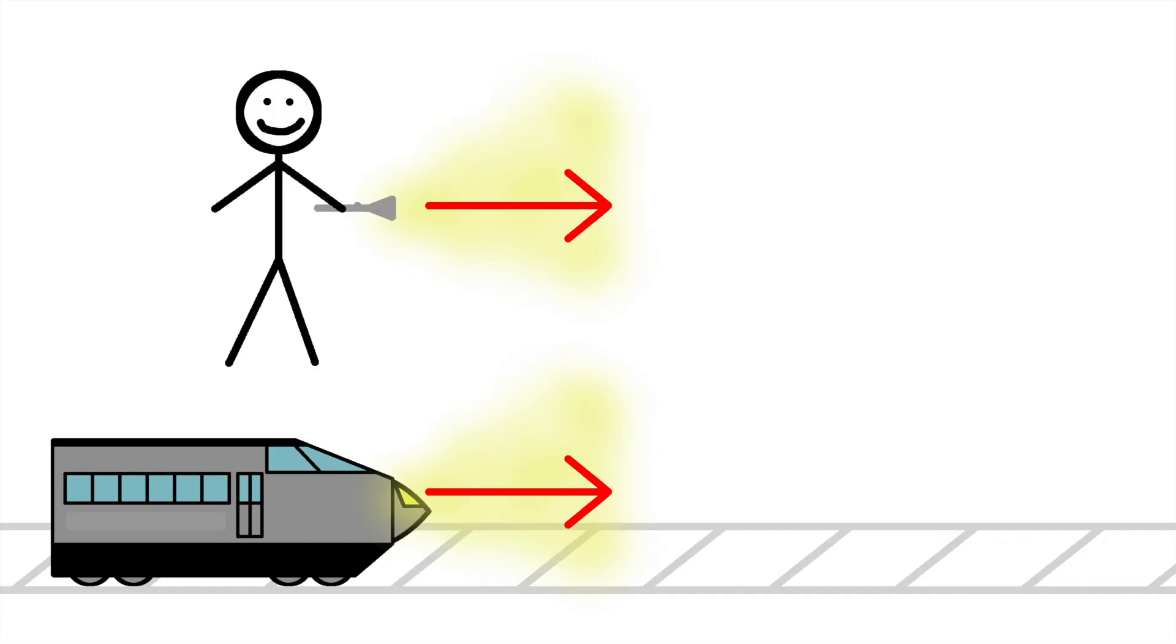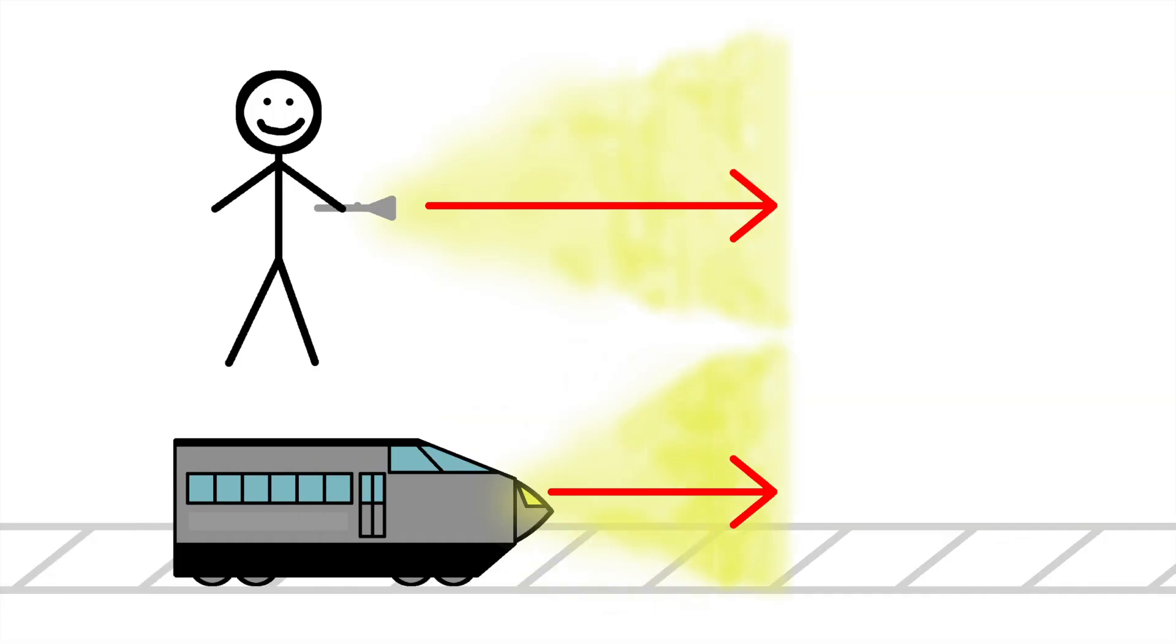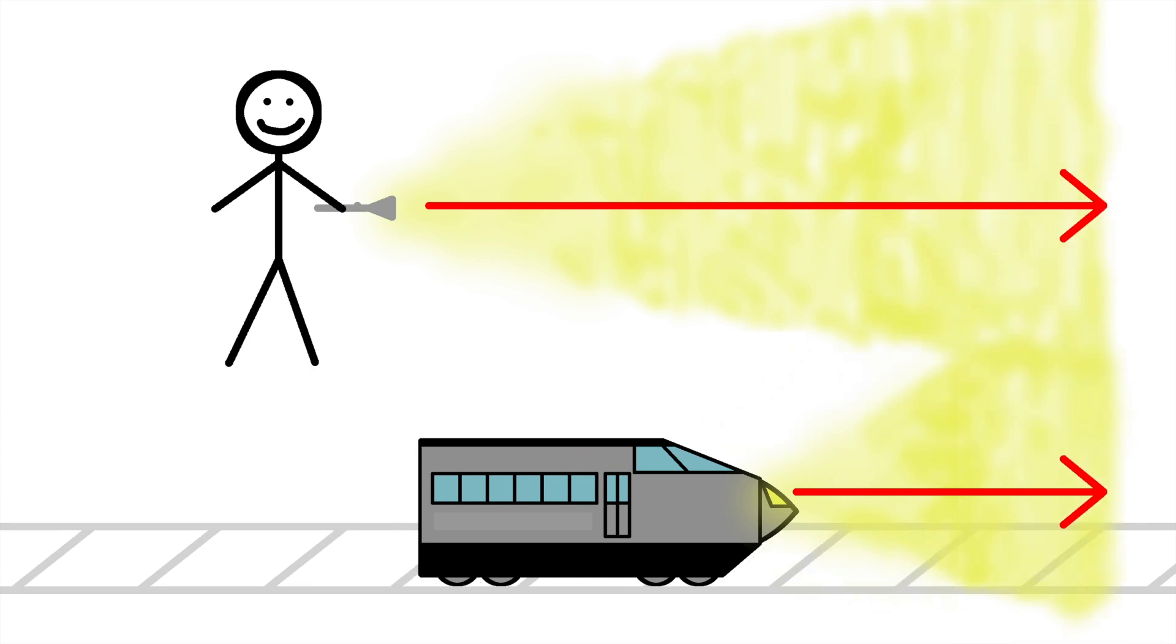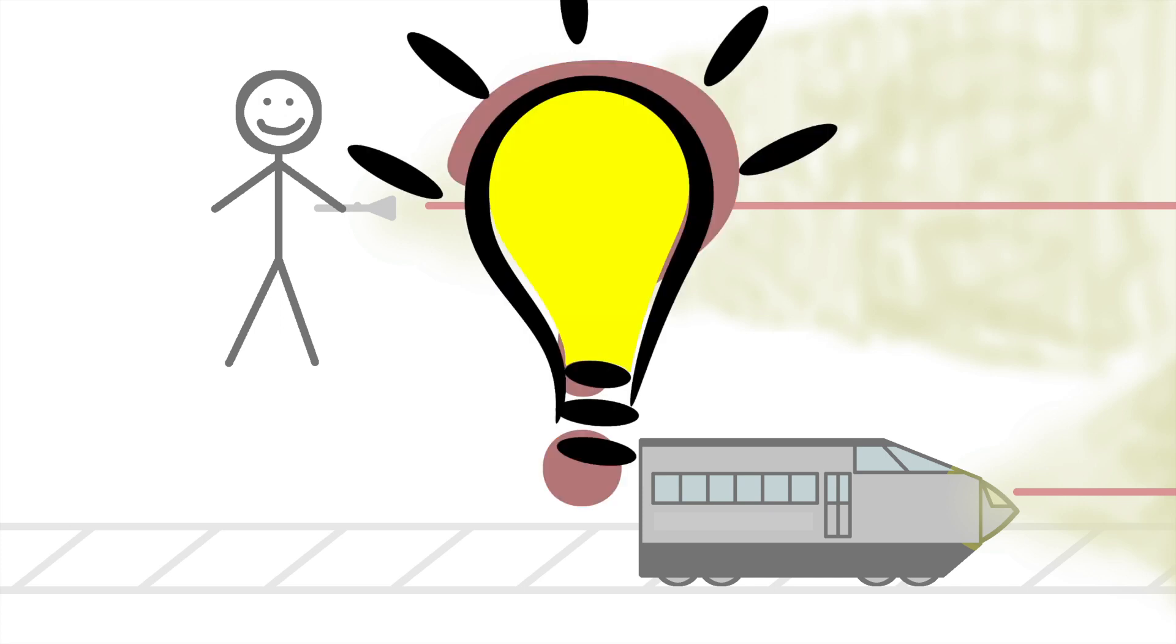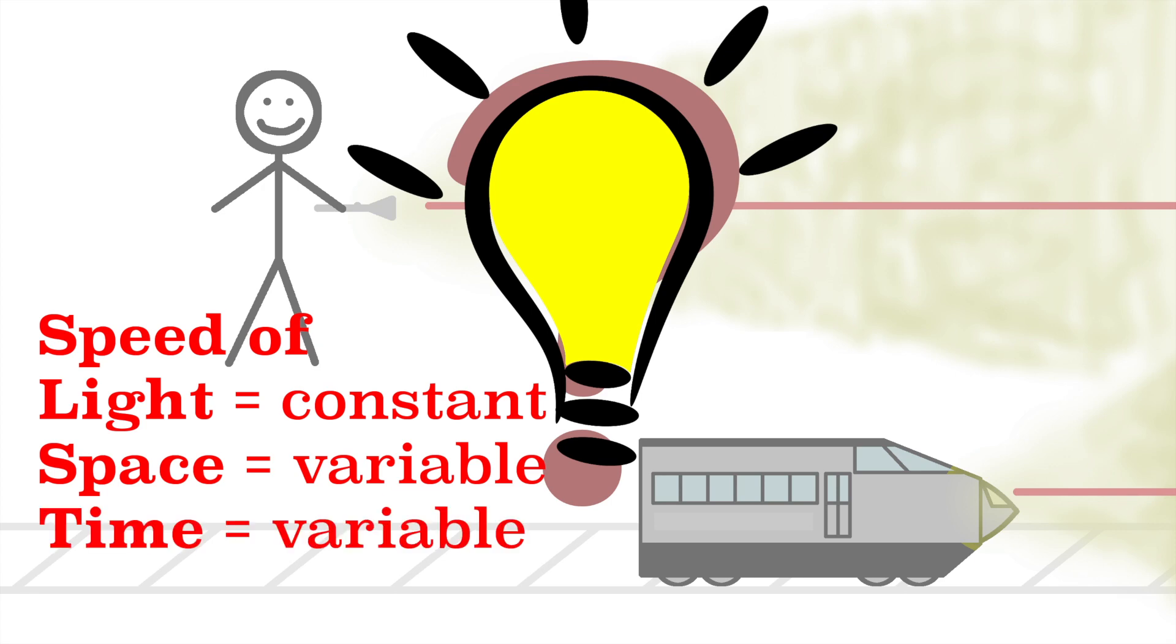In other words, when you shine a light on a moving train, why is the speed the same as when you shine the light standing still? Einstein's answer to this question was simple yet radical. If the speed of light doesn't change, perhaps space and time do.